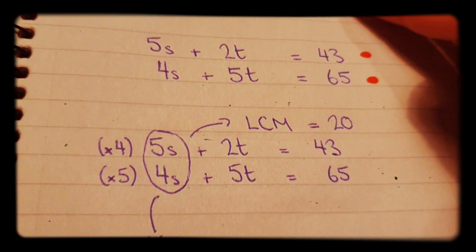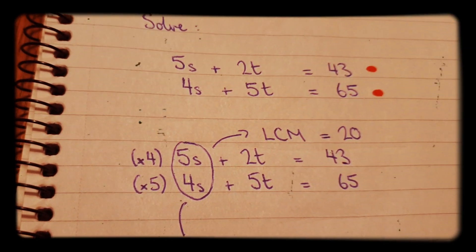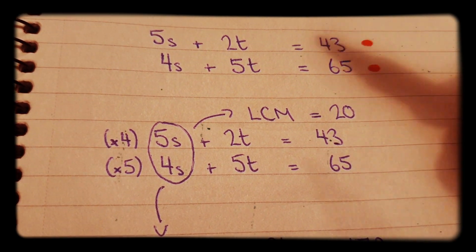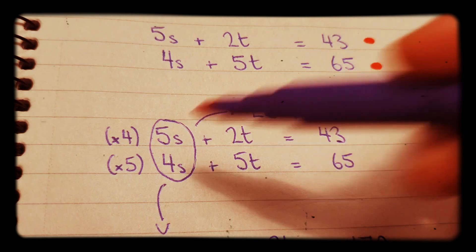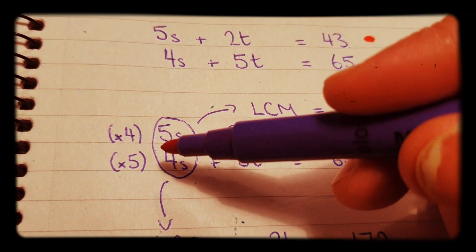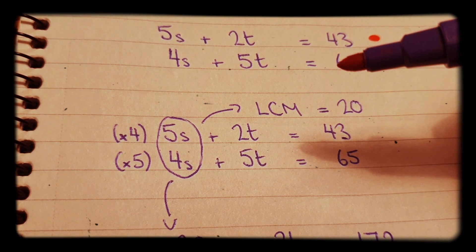So what we need to do is look for the lowest common multiple of either the s's or the t's, and I've picked the s's. So we've got a 5s and a 4s. What's the lowest common multiple of 5 and 4?